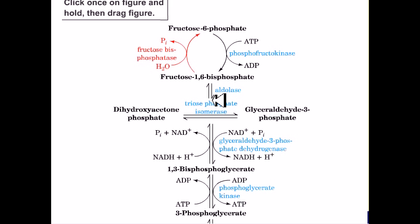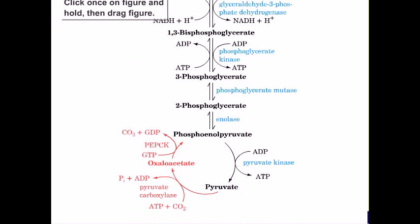Glucose can be synthesized from non-carbohydrate precursors in a process called gluconeogenesis. This occurs when the body has exhausted its supply of glucose and glycogen. Many of the steps are simply a reversal of the glycolytic pathway, but some are different.